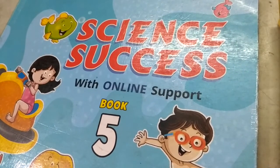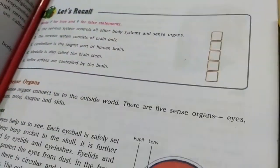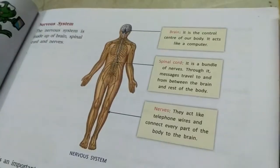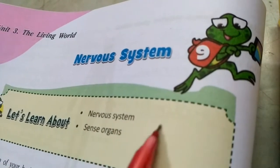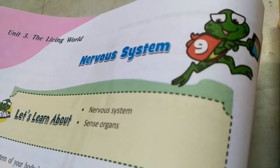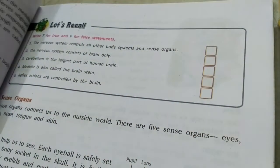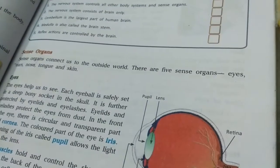Hello and welcome kids once again to your science classes of Grade 5. In this part of the video, I am going to discuss with you the book exercises and keywords of chapter number 9 of your science coursebook, which is about the nervous system. We have studied about the nervous system, its parts — brain, spinal cord, nerves — and about the five sense organs: eyes, ears, nose, tongue, and skin.